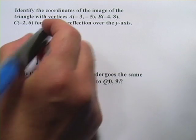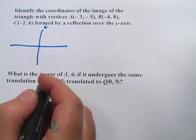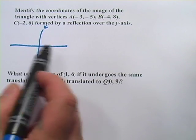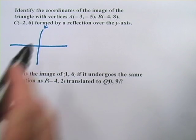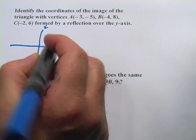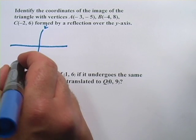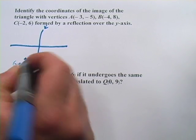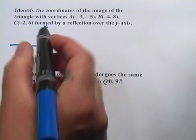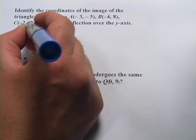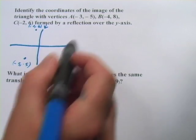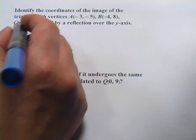So let's take a look at this. Here's the y-axis. We're going to be reflecting this triangle across that y-axis. Let's draw in the vertices here. So A(-3, -5) is maybe down here. C(-2, 6) is going to be up here.